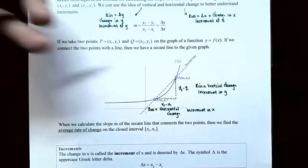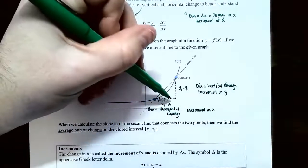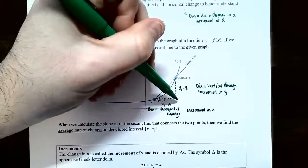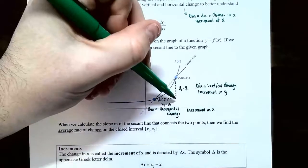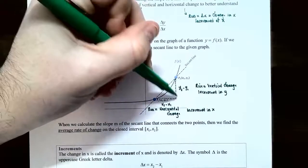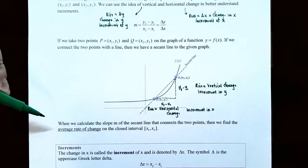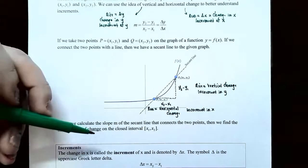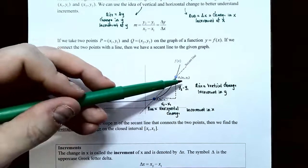Earlier in the course we calculated the slope of the secant line using the average rate of change. The difference in x values between P and Q is called the run, or the increment in x. The difference between the y values is the increment in y, or the rise. The slope of the secant line is the average rate of change over the closed interval from x1 to x2.